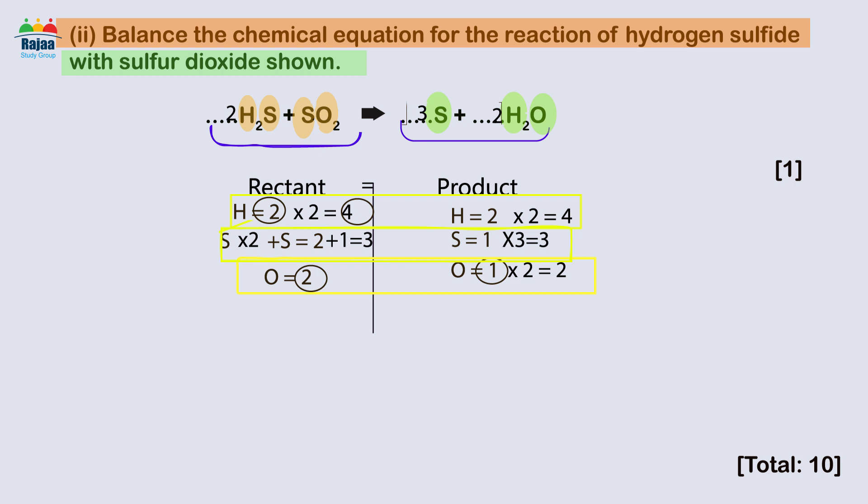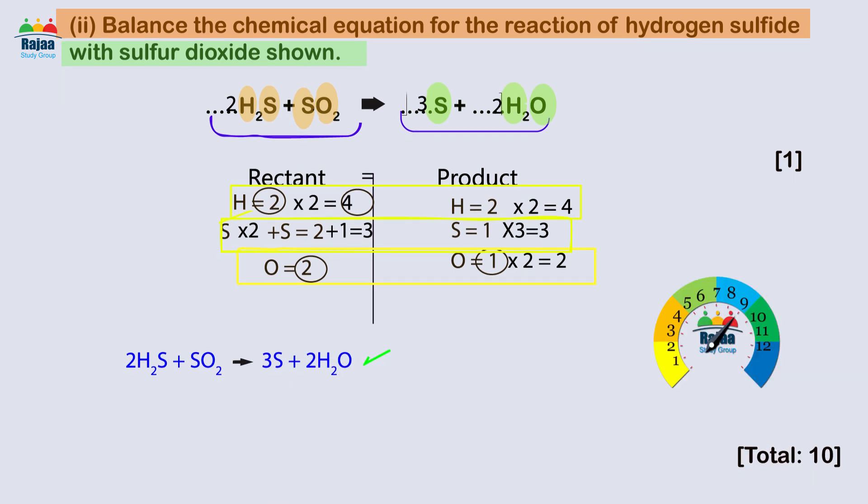Four B(ii): The correct answer was 2H2S + SO2 → 3S + 2H2O. Score: one mark.